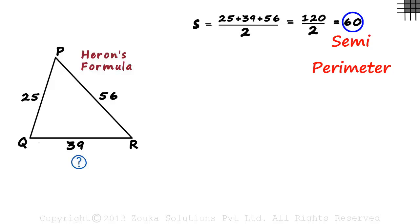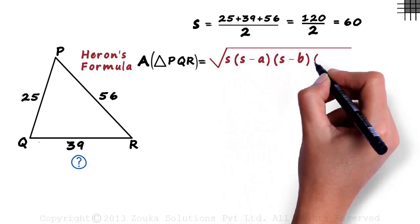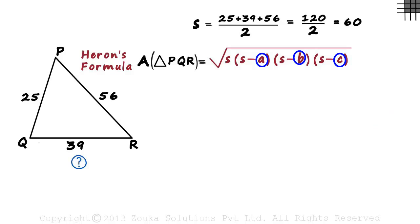But how do we use Heron's formula? How do we find the area of triangle PQR? The area of triangle PQR will equal square root of S multiplied by S minus A multiplied by S minus B multiplied by S minus C, where A, B and C are the three sides of the triangle.